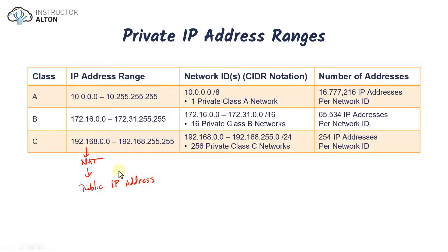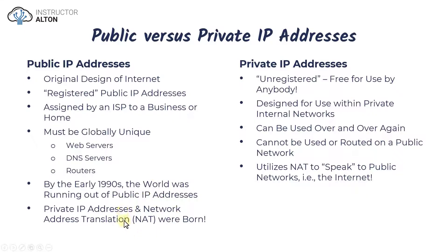This solves a lot of issues with running out of public IP addresses. However, it's not a long-term solution — private IP addresses and NAT were designed to be a short-term fix. IP version 6 has actually been around for a very long time, but because we have NAT and private IP addresses, IPv4 is still commonly used. You may see a dual stack configuration where a system has both an IPv6 and an IPv4 address, meaning it can communicate with devices using either protocol.